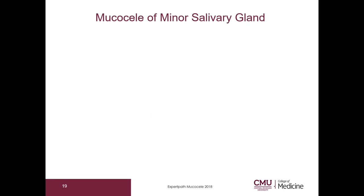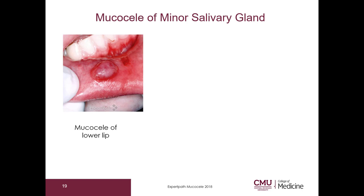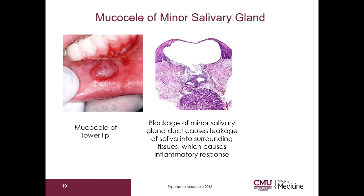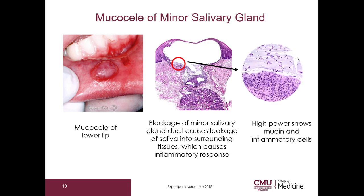Let's go on to discuss mucocele of the minor salivary gland. Here is a gross picture — you can see the lesion on the lower lip, which is a very common location. Blockage of a minor salivary gland duct can cause leakage of saliva into surrounding tissues, which causes an inflammatory response. On high power, you can see that there is mucin and inflammatory cells in the cyst.